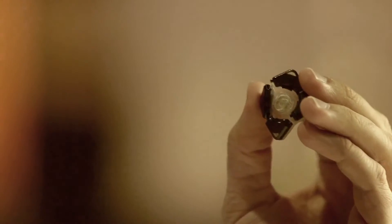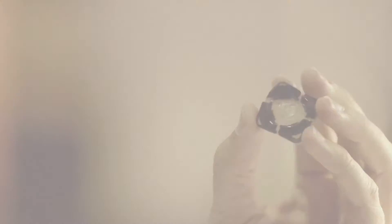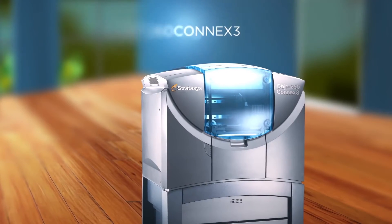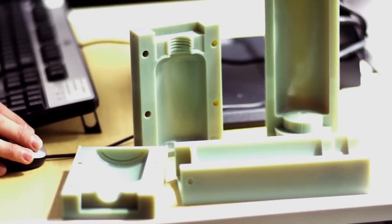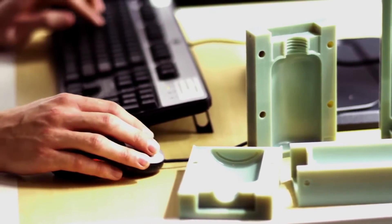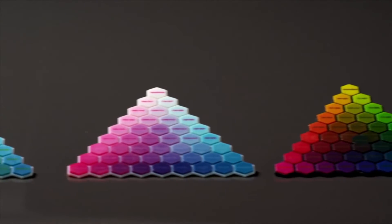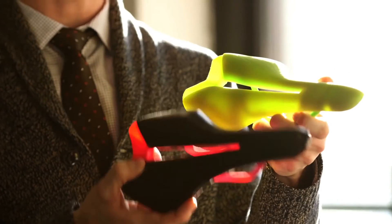The Objet 260 Connex 3 brings the world's only color multi-material 3D printing technology to a compact size and within reach to more designers. It provides all the capabilities of Connex 2 plus the complete range of PolyJet materials for maximum design freedom and final product realism.